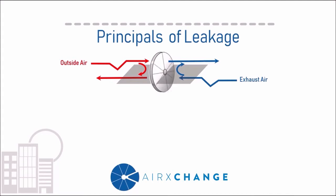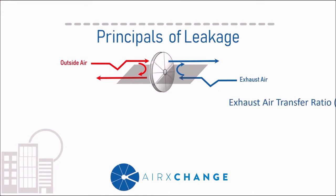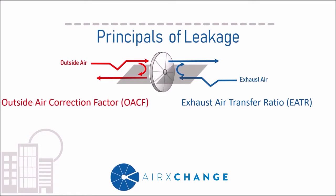It's important to keep in mind that both air streams are going to exhibit this characteristic, which is commonly referred to as leakage, cross-contamination, and a thousand other arbitrary terms. The technical term on the building side is the Exhaust Air Transfer Ratio, and on the outside air side it's the Outside Air Correction Factor. Most folks abbreviate them to EATR and OACF respectively.